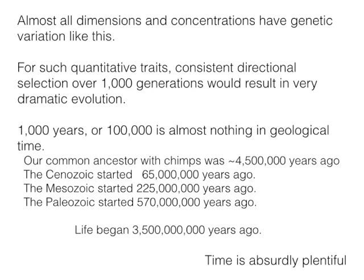Our common ancestor with chimps was perhaps four and a half to seven million years ago. The Cenozoic started 65 million years ago — when the last non-avian dinosaurs went extinct. The Mesozoic started 225 million years ago. The Paleozoic started 570 million years ago, with the radiation of complex multicellular organisms associated with increased atmospheric oxygen. Life began 3.5 billion years ago. These timescales are orders of magnitude more than needed to produce dramatic evolutionary differences — time is absurdly plentiful to explain evolution.